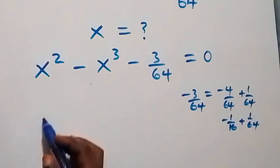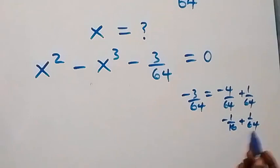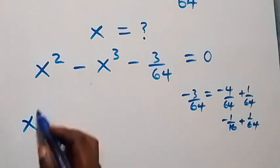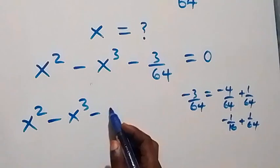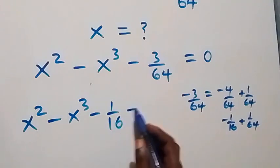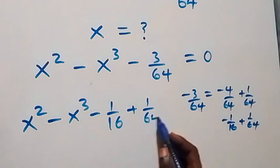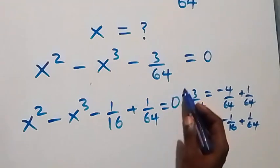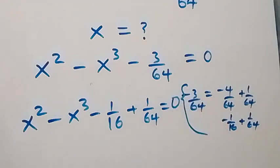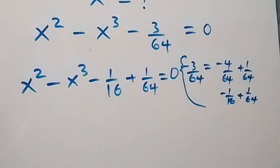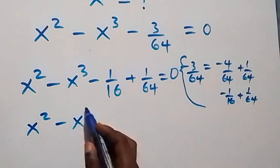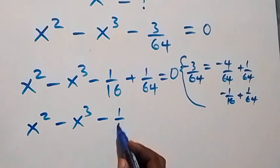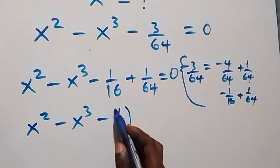We replace minus 3 over 64 with this, so the equation becomes x squared minus x cubed minus 1 over 16 plus 1 over 64 equals zero. We can also write minus 1 over 16 as minus 1 over 4 squared.